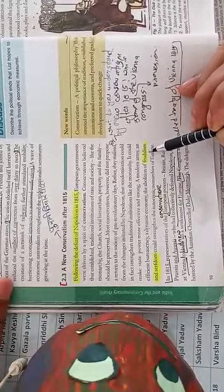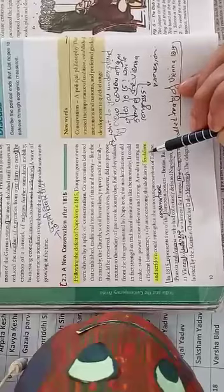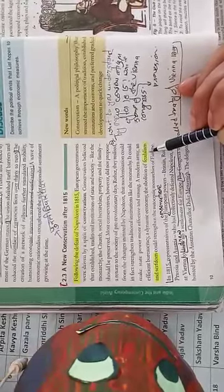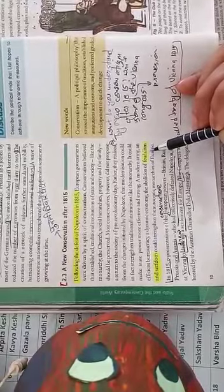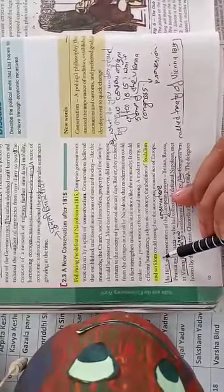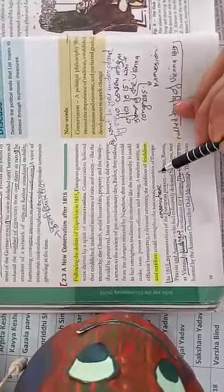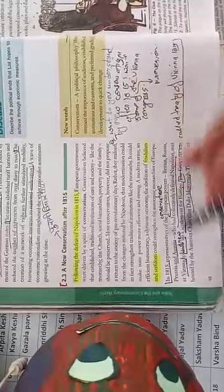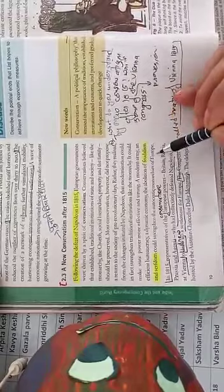The abolition of feudalism and serfdom. Dear students, feudalism was a social system developed in the 8th century Europe. The vassals who were protected by lords, who served these lords in the war - that is feudalism. And serfdom means slavery, gulami. Feudalism aur serfdom ko abolish kar diya gaya tha, could strengthen the autocratic monarchies of Europe. Europe ke autocratic raja ya rajvansh the, unko majbooti mil gayi.